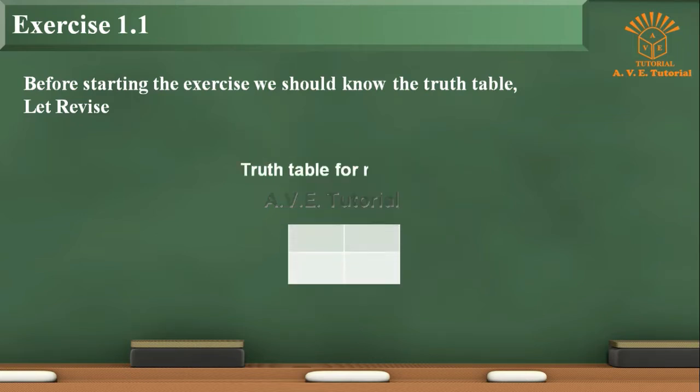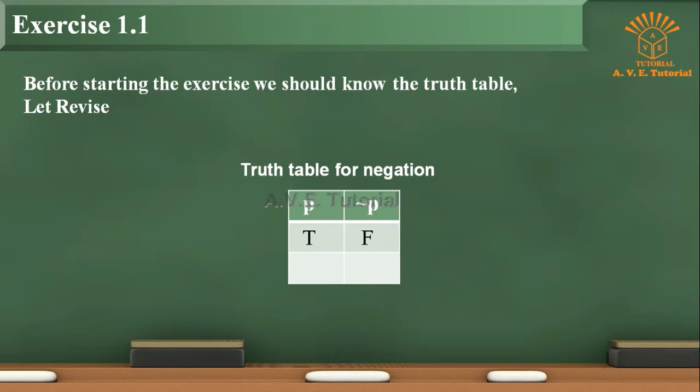Truth Table for Negation. First row: P, Negation of P. Second row: T, F. Third row: F, T.